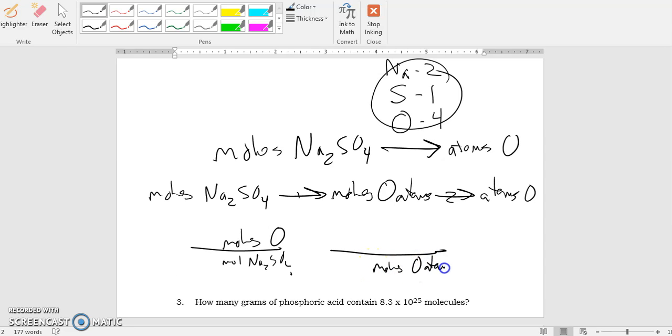Next conversion, moles of O atoms on bottom, atoms of O on top. So what we know over here is that for every one mole of sodium sulfate, there are four moles of oxygen atoms. That might freak you out. How do we know that? Because it's Na2SO4. Every molecule has four oxygen atoms and it stands to reason that if you have a whole mole of these molecules, you'll have four moles of these. So one mole of sodium sulfate gives you four moles of oxygen. This is where it gets a little weirder at first, but not really. We know one mole of oxygen atoms is a certain number of them. What's that number? It's 6.02 times 10 to the 23rd atoms.